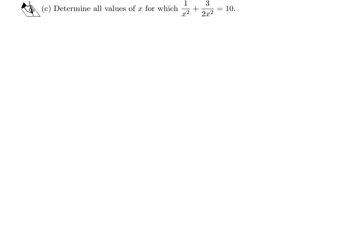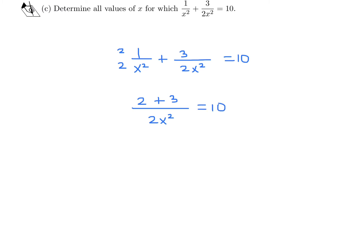Determine all values of X for which 1 over X squared plus 3 over 2X squared equals 10. Multiplying to get a common denominator gives 2 plus 3 over 2X squared equals 10, so 5 equals 20X squared. Therefore X squared equals 5 over 20, which is one quarter, and taking the square root gives X equals plus or minus one half.